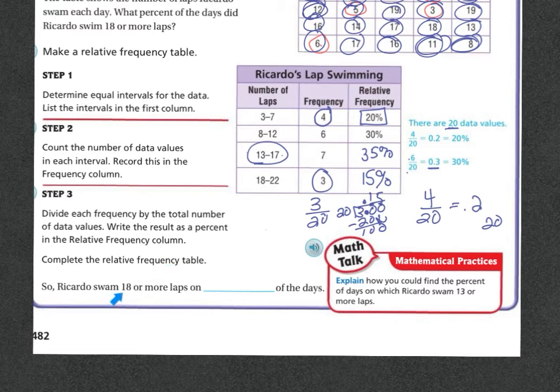Then it says to complete the relative frequency table, and we did that. Now, Ricardo swam 18 or more laps on how many percent of the days? Well, 18 or more laps is right here, 18 to 22, and the percentage was 15. So he swam those 15% of the days.